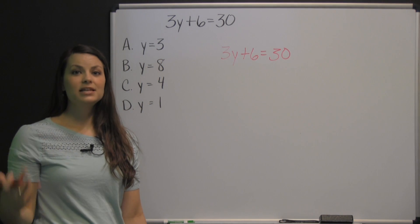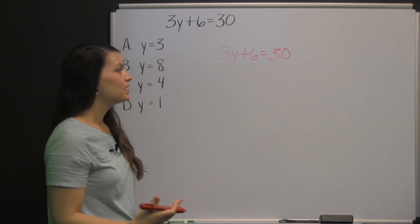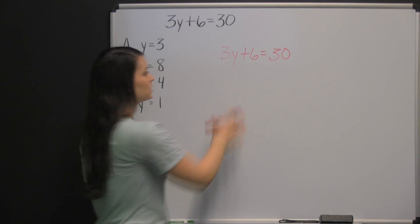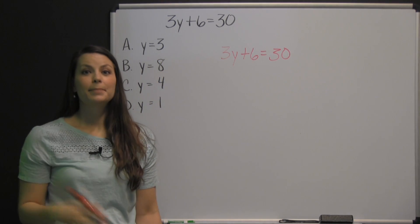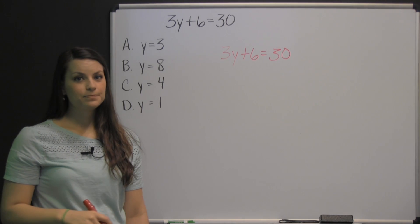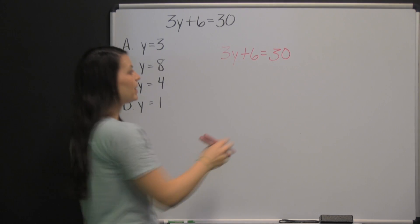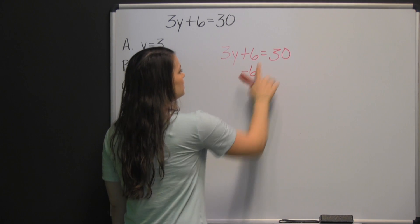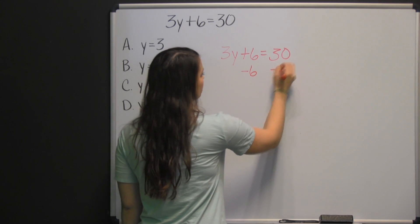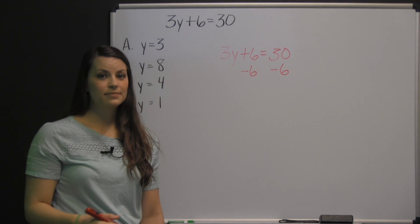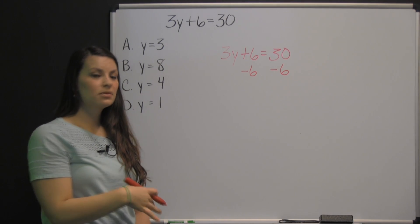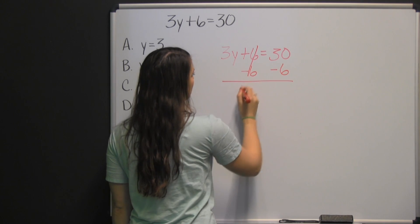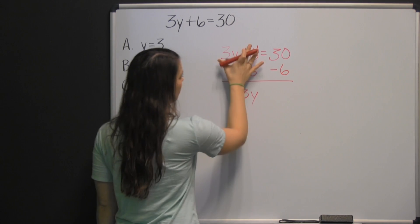Your focus is on the left side of the equation, because that's where your variable is. You're trying to isolate your variable — get rid of everything else. The two operations being done to your variable are: it's being multiplied by three, and we're adding six to it. The best idea is to start by undoing the adding six by subtracting six from both sides. Plus six minus six is zero — those cancel out — and we're left with just three y on the left side.